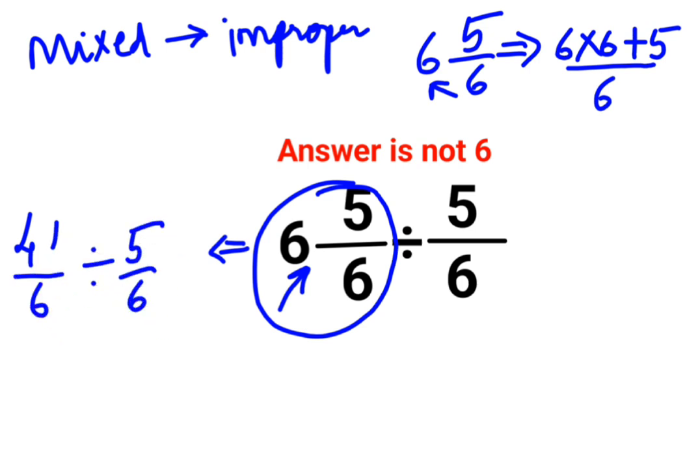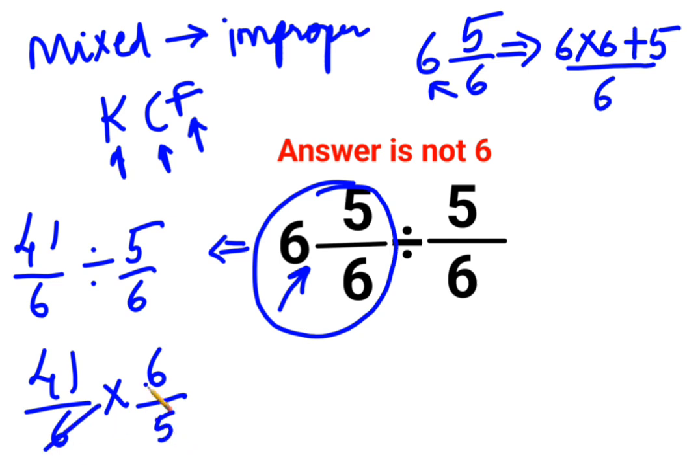Now, we can directly do the division. For division of two fractions, you will follow the rule of KCF. K stands for keeping the first fraction as it is. C stands for changing the division sign to multiplication. And F stands for flipping or taking reciprocal of 5/6 which is 6/5. So, this and this gets cancelled.